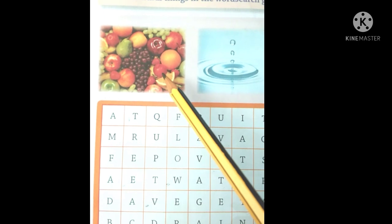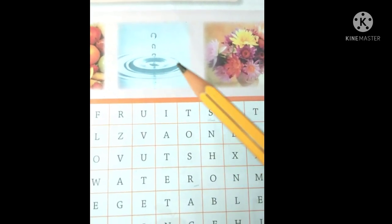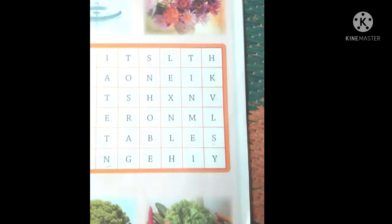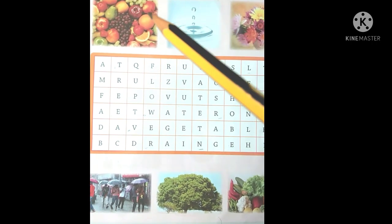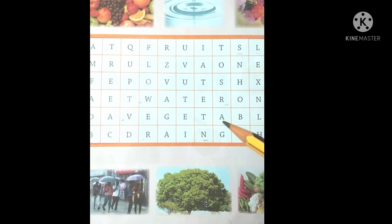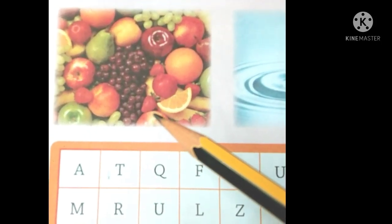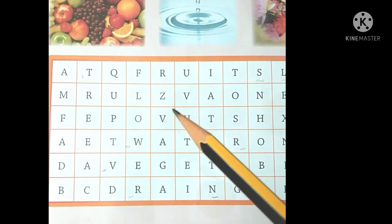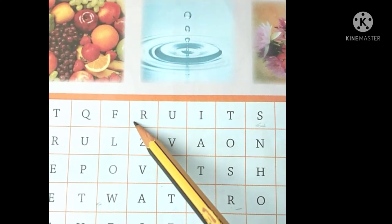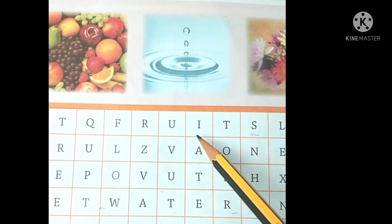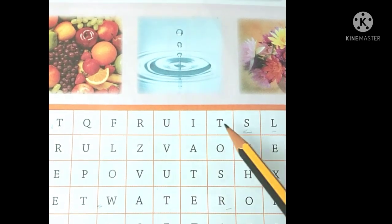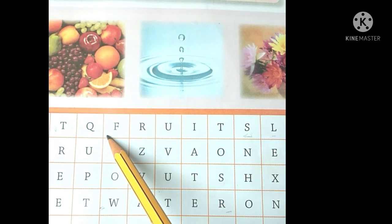Ye natural things kya hai? Fruits. Yahu kiya hai? Water. Yahu pe kya diya gaya hai? Flowers. Here vegetables. Here tree. Here rain. Students, yaha pe word search box diya gaya hai. Sab aapko words natural things ke is box mein se dhundhna hai. For example, fruits — yahan pe dekho F R U I T S — fruits ko aapko circle kar lena hai.